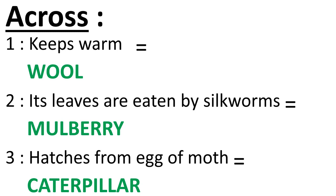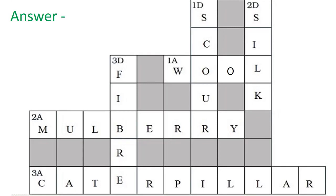Now for the across answers: 1A — keeps warm is 'wool', 2A — its leaves are eaten by silkworms is 'mulberry', 3A — hatches from egg of moth is 'caterpillar'. We have filled all the words and the crossword table is now complete.